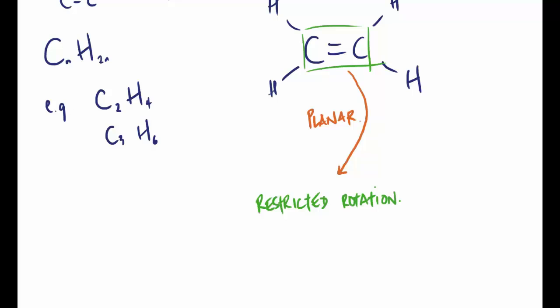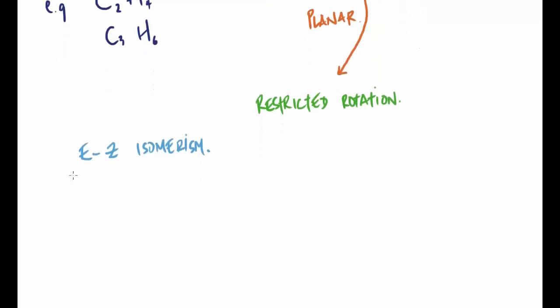The isomerism that forms as a result is E-Z isomerism, which falls under the family of stereoisomerism. Stereoisomerism is the general type of isomerism. E-Z isomerism or geometric as it's also called is a type of stereoisomerism. Optical isomerism is A2 level.